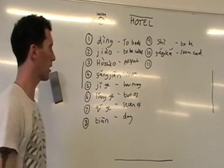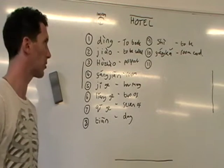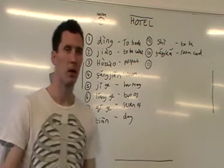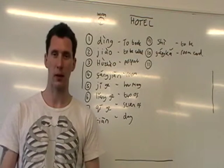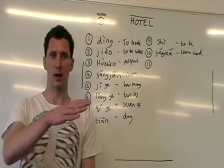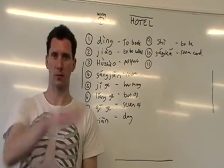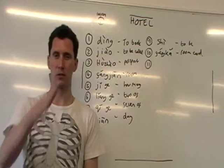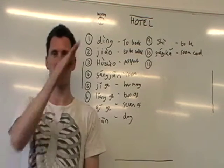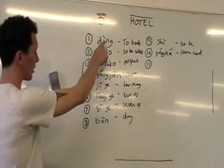We've got a word list here of the most common ten words that you will meet when arriving at the hotel. The first one is 'to book.' It's in the fourth tone — dìng. It starts off high and goes low: dìng, dìng.